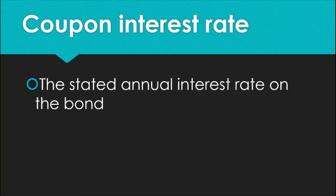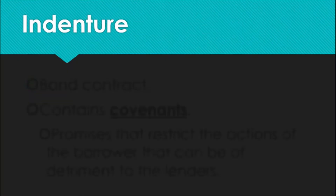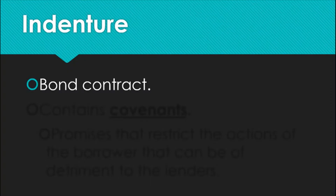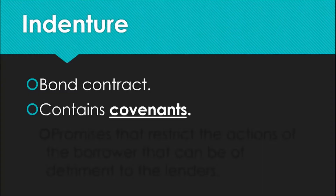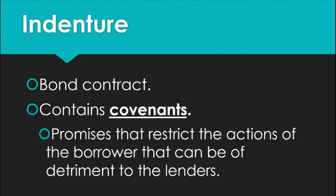The coupon interest rate is the stated annual interest rate on the bond, and this is generally paid semi-annually. The indenture is what we call the bond contract. The indenture contains covenants, which are promises that restrict the actions of the borrower that can be of detriment to the lenders.